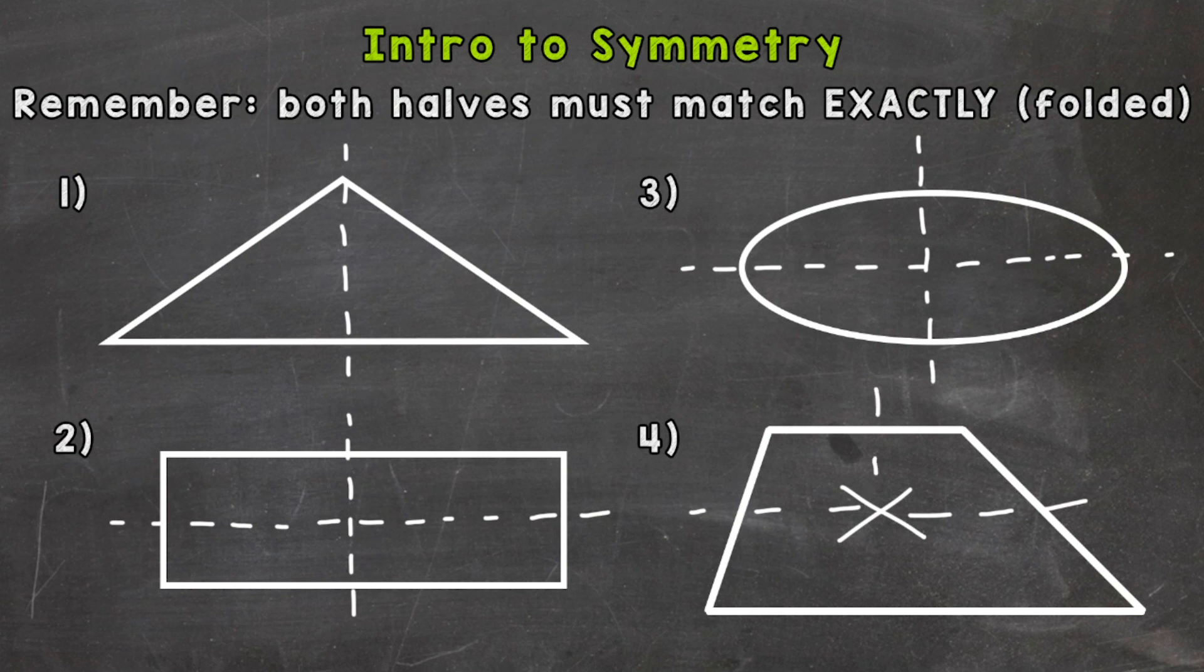Let's try vertically. If we were to fold along that line, those halves wouldn't match either. So that's not a line of symmetry.